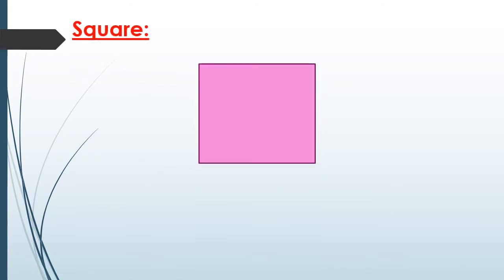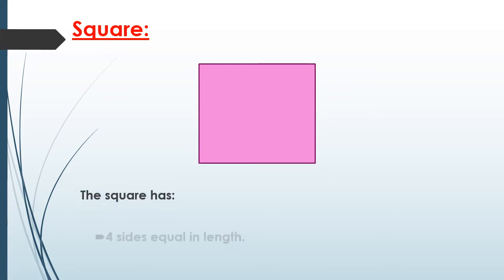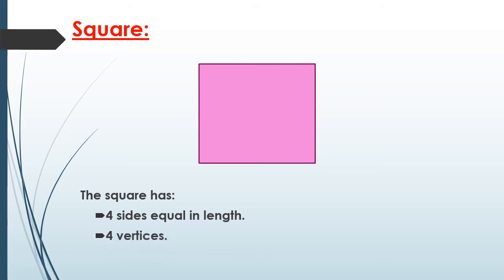The first shape is a square. The square has four sides equal in length — what does equal in length mean? They are equal. The four sides are equal and it has four vertices.